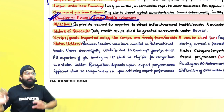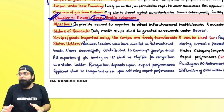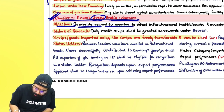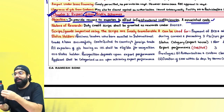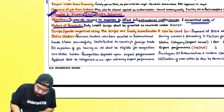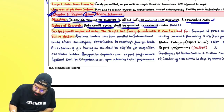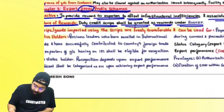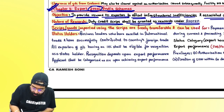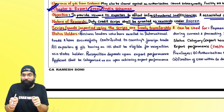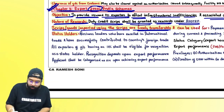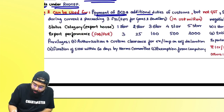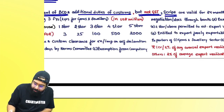Scripts or goods imported using the scripts are freely transferable. Scripts can be used for payment of basic custom duty and additional duties of customs, but not for GST. Scripts are valid for 24 months. To encourage exports from India, the government gives status recognition. Status holders are business leaders who have excelled in international trade and have successfully contributed to the country's foreign trade.